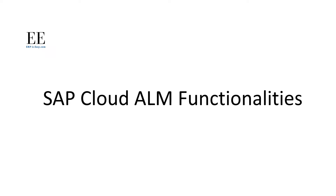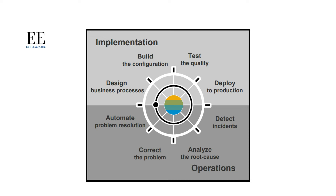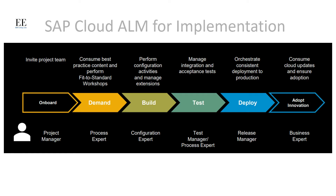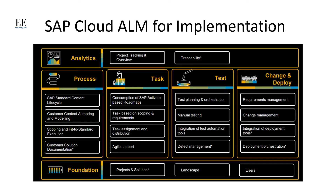Cloud ALM's functionalities are divided mainly into two categories: Cloud ALM for Implementation and Cloud ALM for Operations. Just like a waterfall software development model, you design, build, test, and deploy the software. In the design phase, you design functionalities in the SAP system as per business requirements and conduct fit-to-standard workshops to convert business requirements into standard SAP processes. Once the design is complete, you configure the software, then test the configurations, and finally deploy and go live.